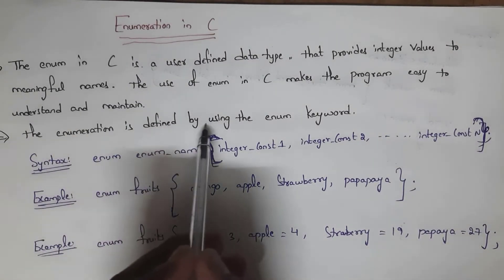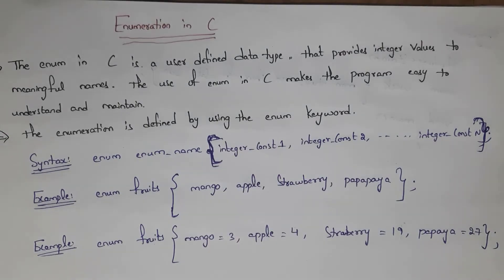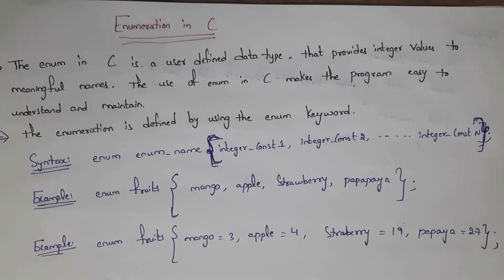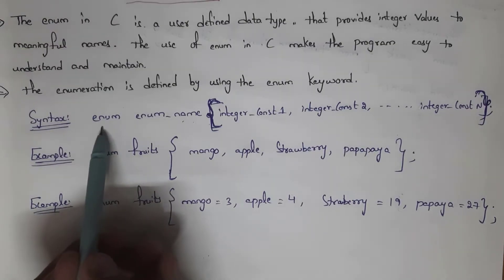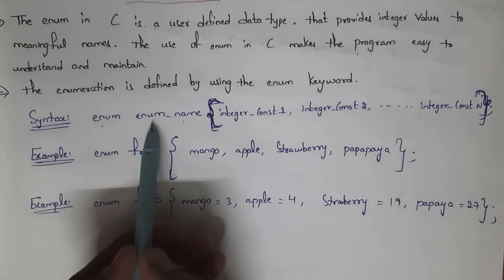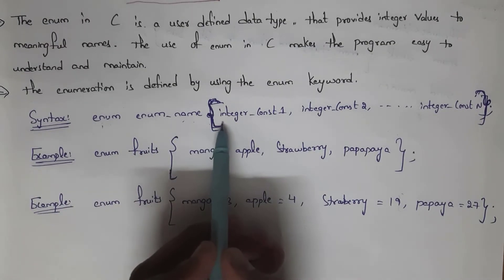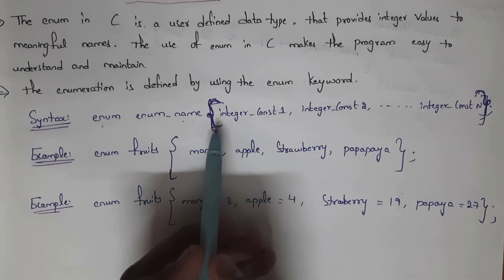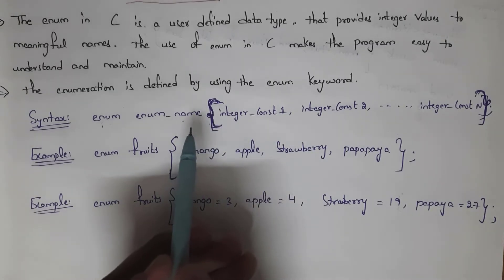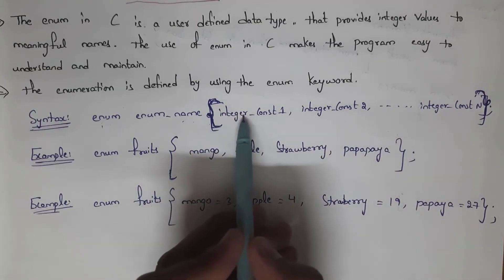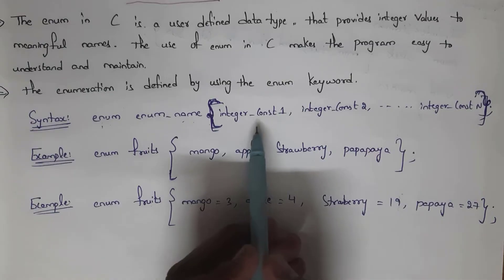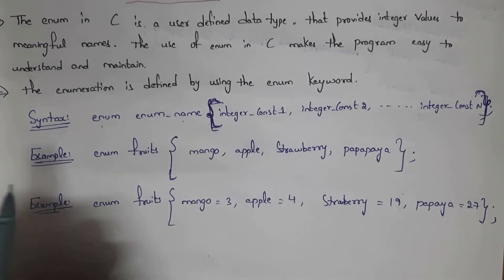The enumeration is defined by using the enum keyword. For example, we define integers with the int keyword and characters with the char keyword; similarly for enumeration we use the enum keyword. The syntax is: first write the enum keyword, then write the enum name, and inside curly brackets you can write any number of integer constants — these constants are just names. The enumeration data type will convert these names into integer values.